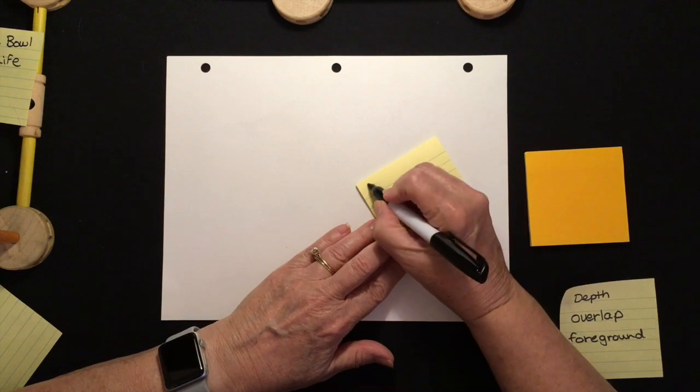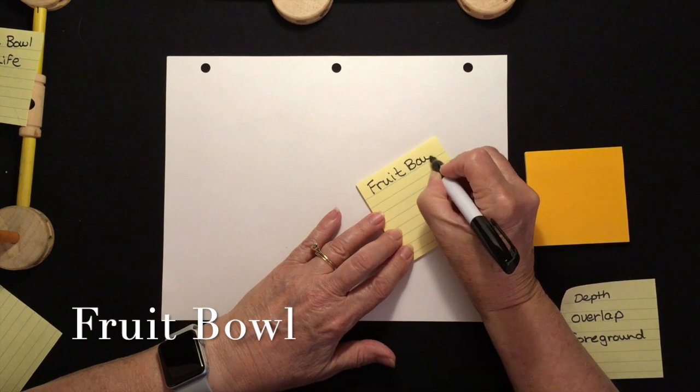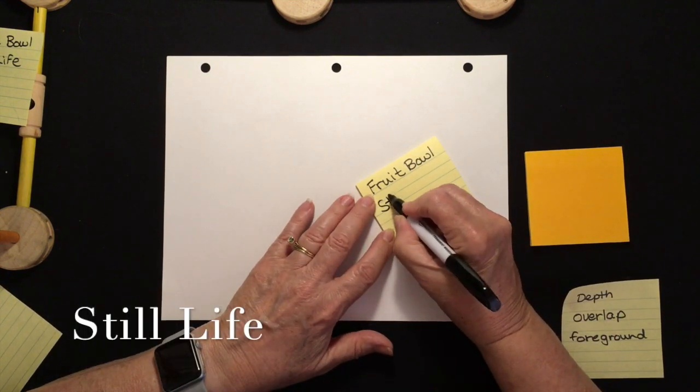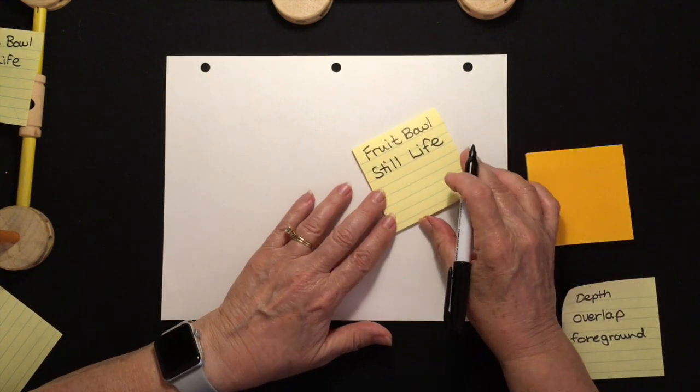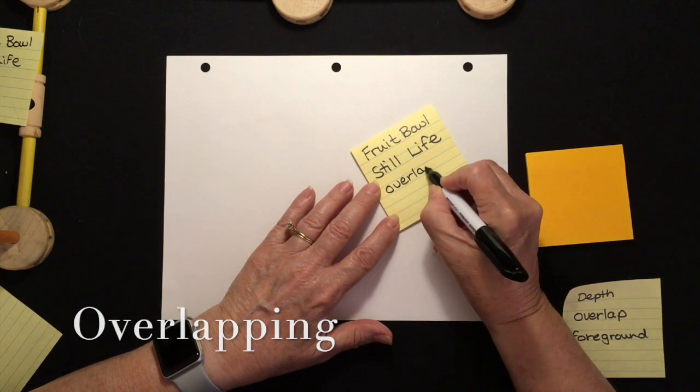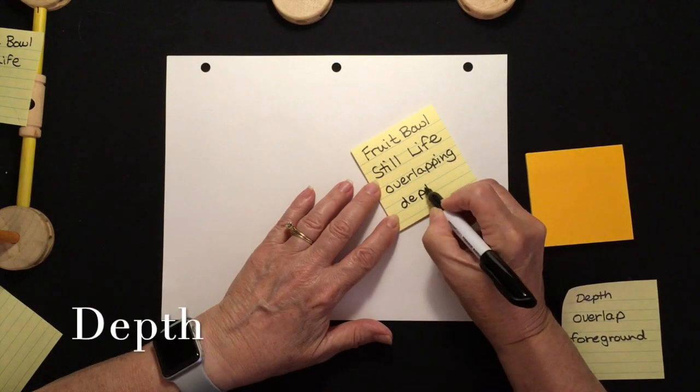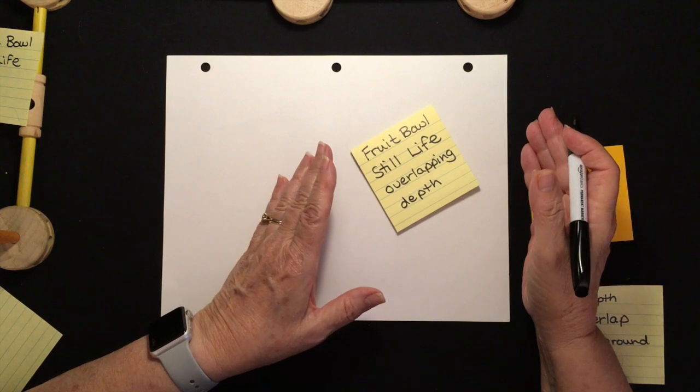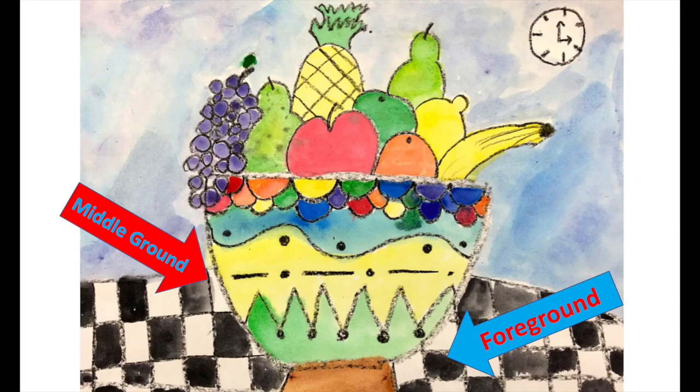Greetings boys and girls. Your project today will be a fruit bowl, that's the subject. Still life, that's the kind of drawing. And we are going to be using overlapping to create depth. A still life is a little bit different than a landscape, because a landscape would have a foreground, middle ground, and background. But a still life pretty much has only a foreground and maybe a middle ground.